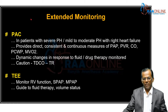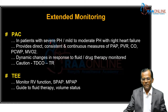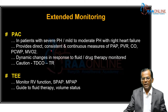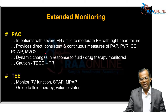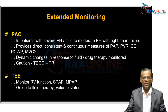What is the extended monitoring? Apart from basic monitoring, you can use a pulmonary artery catheter. Which patient would you use it for? If the patient has severe pulmonary hypertension, or mild to moderate pulmonary hypertension with features of right heart failure. The pulmonary artery catheter provides direct, consistent, and continuous monitoring of pulmonary artery pressure, vascular resistance, cardiac output, wedge pressure, and mixed venous oxygen saturation. It can be used to guide fluid and drug therapy. But the problem in significant pulmonary hypertension is these patients might present with significant tricuspid regurgitation, making it difficult to place the pulmonary artery catheter in position.